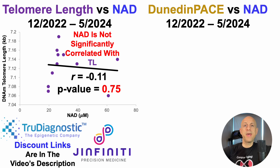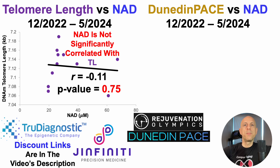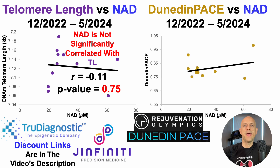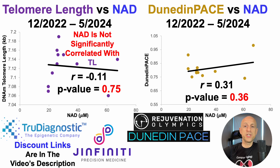What about DunedinPACE? As I mentioned, it's potentially the best epigenetic clock for addressing the epigenetic speed or pace of aging. It's been popularized because of the Rejuvenation Olympics, which is basically a competition to see who has the slowest epigenetic pace of aging, as the Rejuvenation Olympics uses DunedinPACE. With the data shown here for DunedinPACE versus NAD, we can see that the correlation is not significant — the p-value is 0.36.